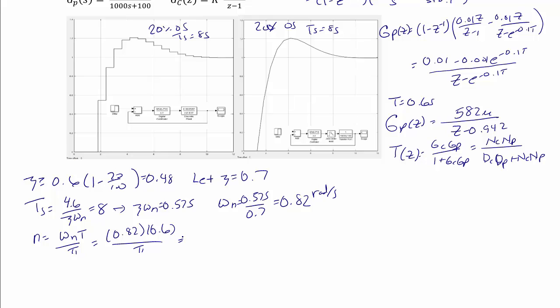So now we solve for our integer multiple for our natural frequency, n is equal to omega n t over pi, which is 0.82 times 0.6 over pi. So our integer n is equal to 0.157.